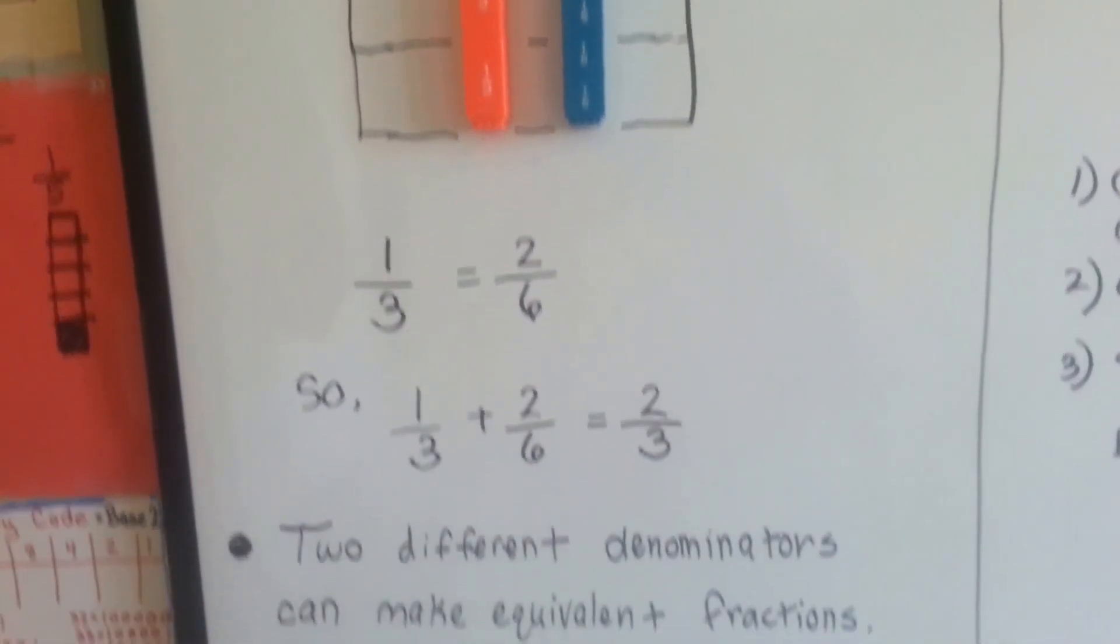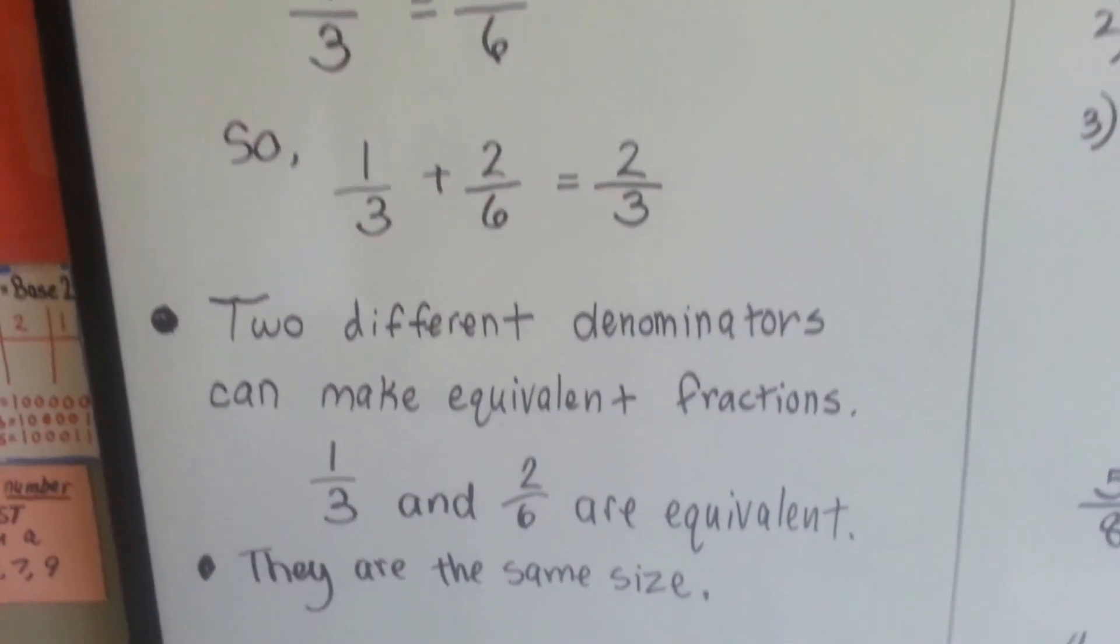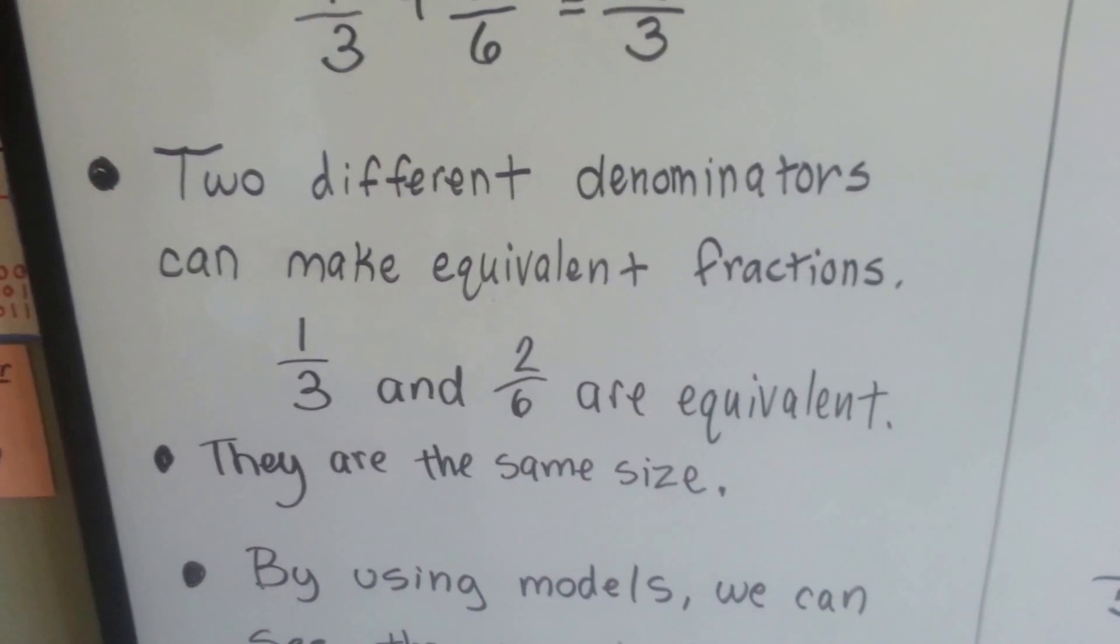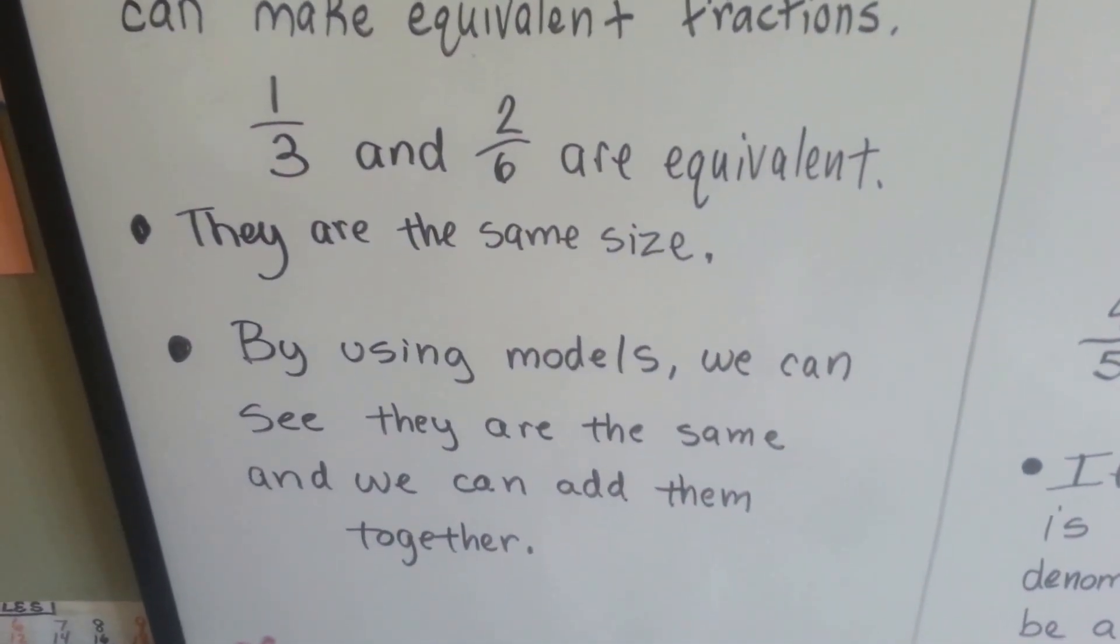Or, it would be the same as 2 thirds. Two different denominators can make equivalent fractions. 1 third and 2 sixths are equivalent. They're the same size. By using models, we can see they're the same and we can add them together.